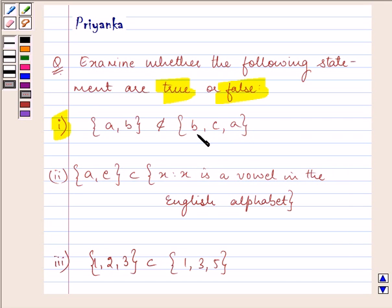But we can clearly see that elements a and b are present in this set also. So that means this is a subset of this set, but it is given to us that it is not so.